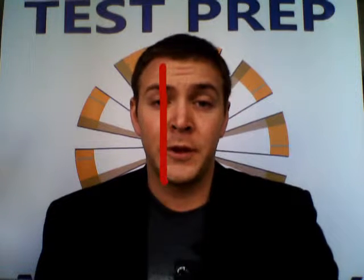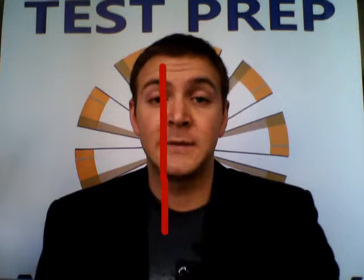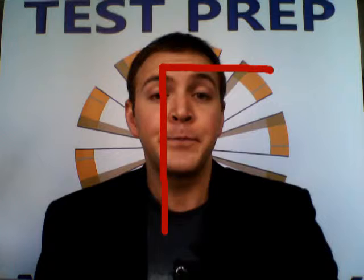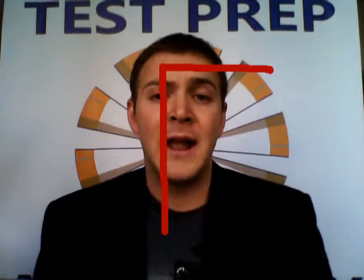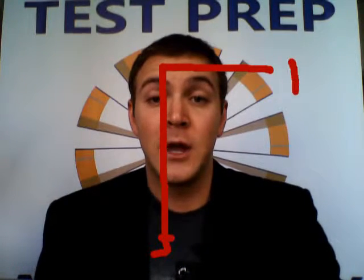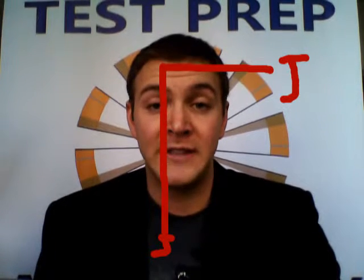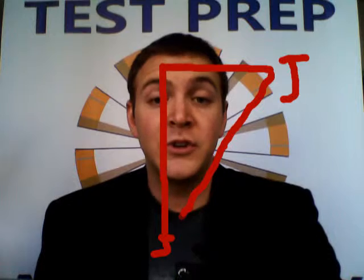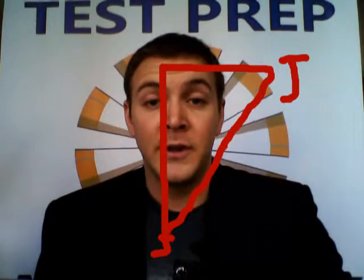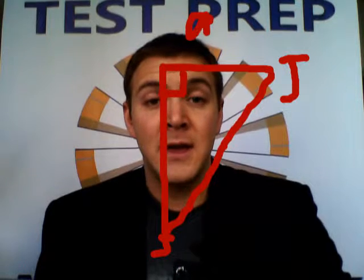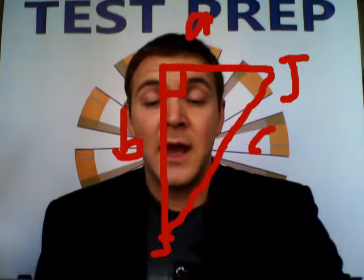Another really common hidden hypotenuse problem is when they say Sally lives five miles north of here and six miles east of here, and ask how long is it from Sally's house to Jenny's house. The best way to do this is to once again realize it's a hidden hypotenuse — this is what you need to find, which is just the hypotenuse of the right triangle. So label side A, side B, side C, and you're good to go.